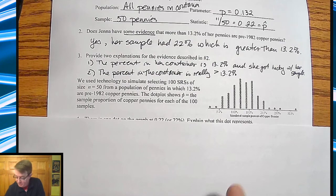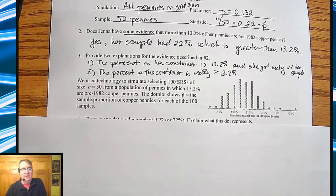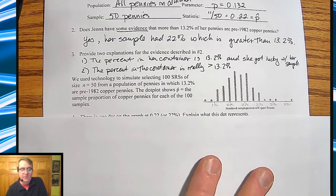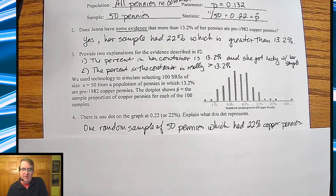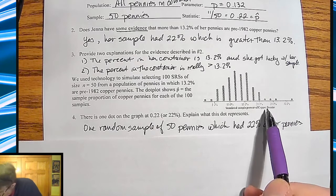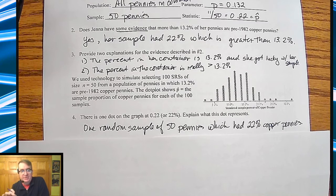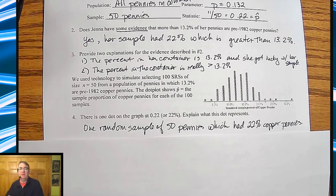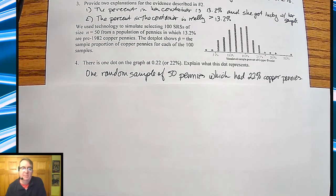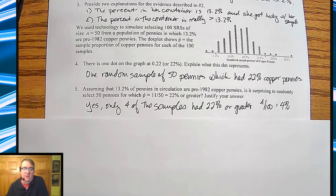If the population mean is 13.2%, the sample means should be kind of somewhere around there too, right? There is one dot at 22%. Explain what this dot represents. Right here at 22%, that dot is a simple random sample of 50 pennies, which had 22% copper pennies in the sample. That's all it means.